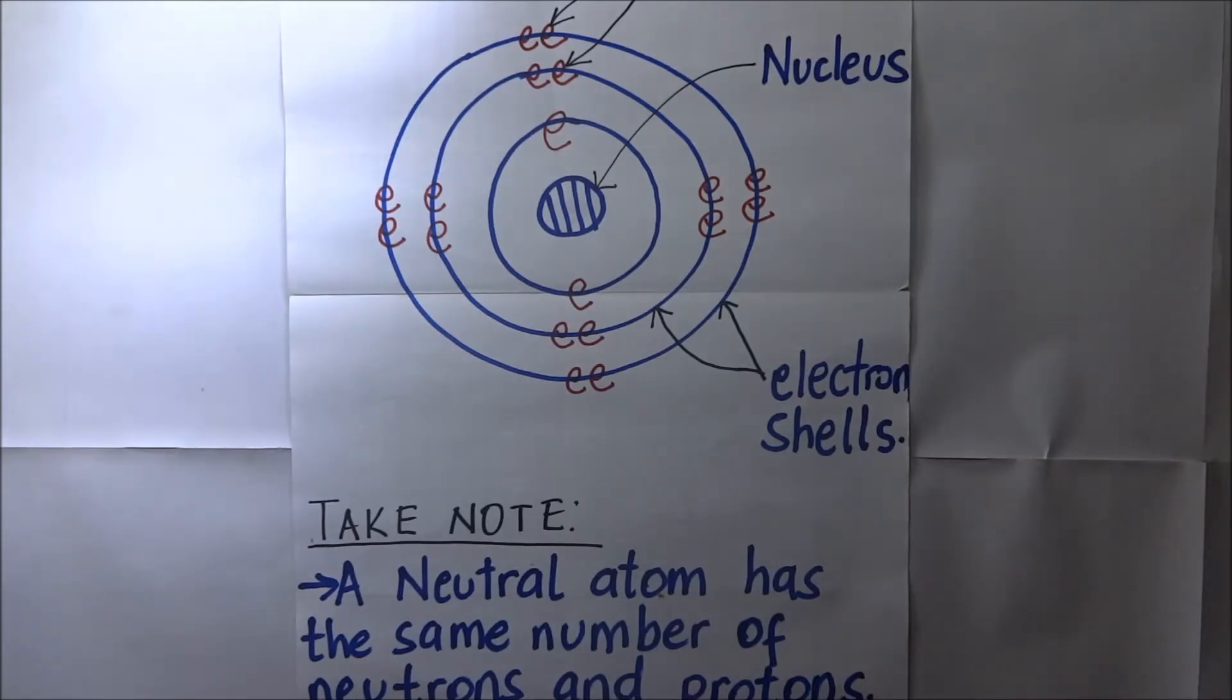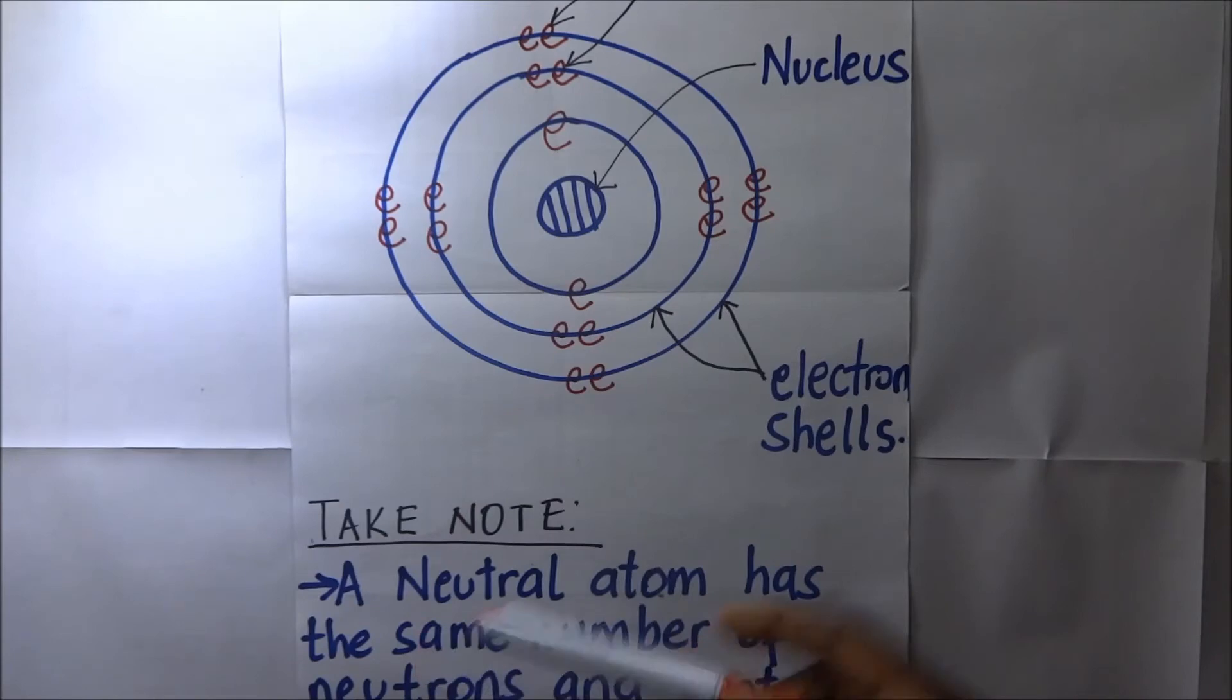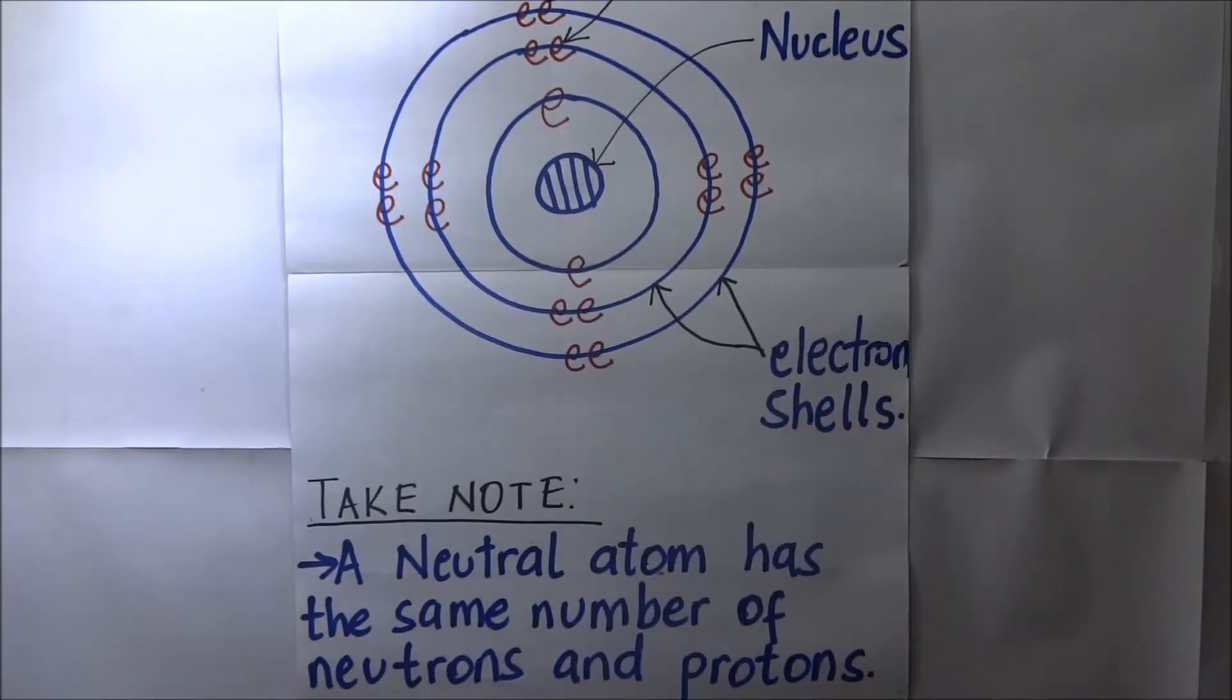Likewise, during bonding, this atom can gain more electrons. When it gains more electrons, it means that we are having more negatives than positives, and so it means that overall, the atom will be considered negatively charged.